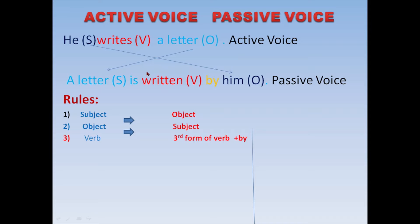The third rule: in this sentence, the verb changed — 'writes' was the first form of verb, and it was changed to the third form of verb. Along with that, 'by' was added. So the third rule is: in passive voice, whatever verb there is, it will change into the third form of verb — 'write' became 'written'. This is a universal rule that applies to every sentence: subject becomes object, object becomes subject, third form of verb is used, and 'by' is added.